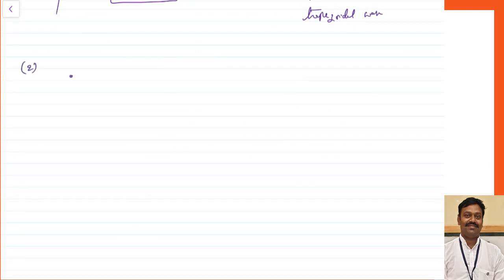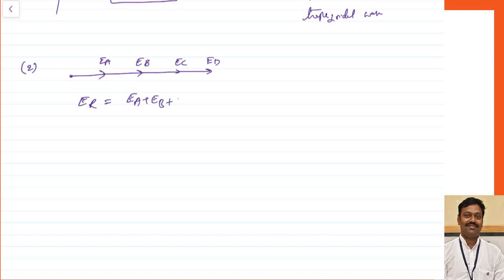If you are going for the concentrated winding, the EMF induced in each conductor will add up. Let us assume there are four conductors, so EMF will add up: EA, EB, EC and ED. The resultant value of EMF is equal to EA plus EB plus EC plus ED because all will be in phase with each other.